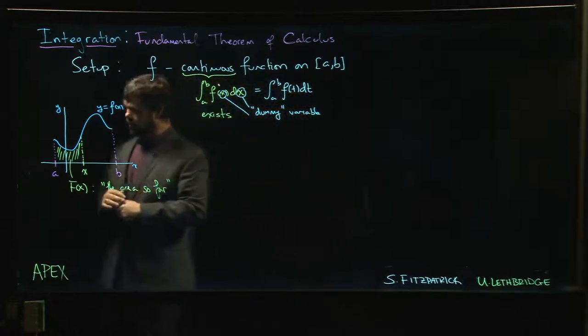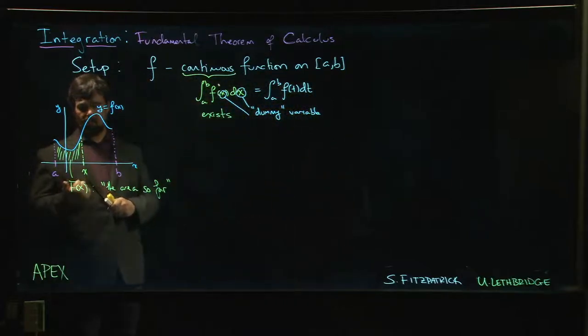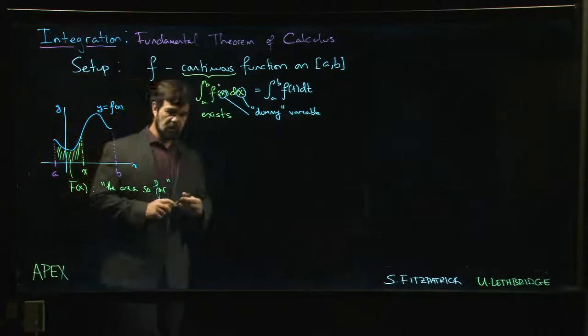It's a function because what do we need to have a function? We need to make sure that for a given input there's a well-defined output, and only one output. And that's the case here, right? As soon as I choose x, I'm just computing the area from a to x. That's some number. So a number goes in, number comes out. This is a function, and in fact we know how to compute this number.